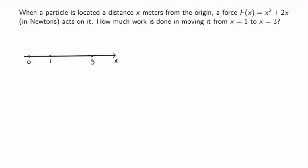For my first problem, I'm going to consider a particle that's moving from x equals 1 to x equals 3, subject to a variable force — a force that depends on position x. How can I calculate the work done? I can't use the standard formula here because the force is not constant, so the work is not equal to the force times the distance.